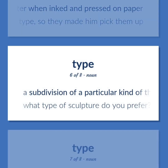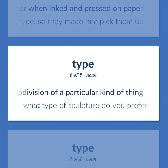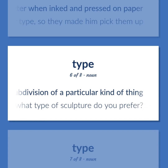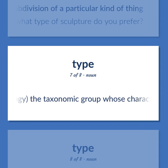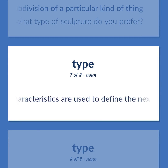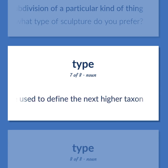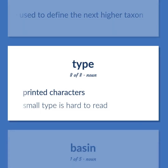A subdivision of a particular kind of thing — what type of sculpture do you prefer? Biology: the taxonomic group whose characteristics are used to define the next higher taxon. Printed characters — small type is hard to read.